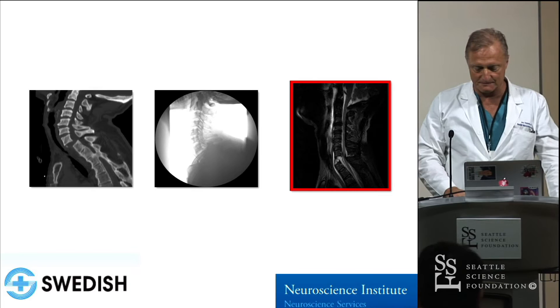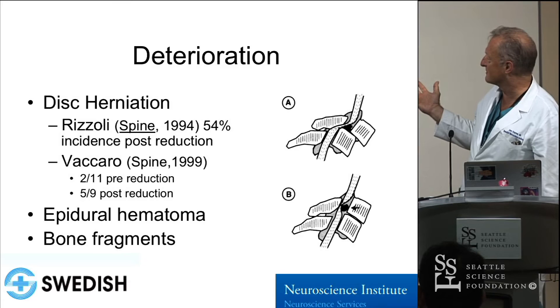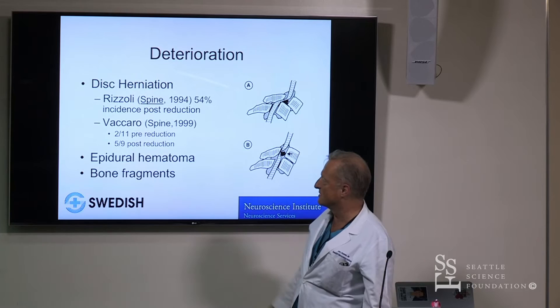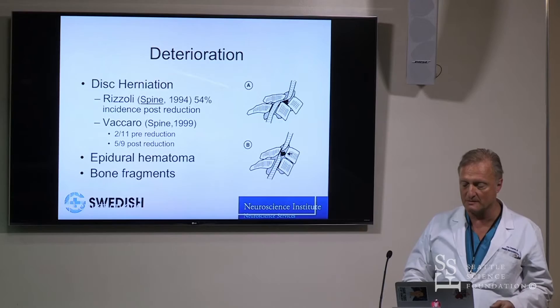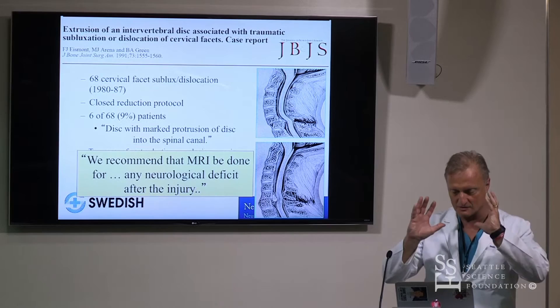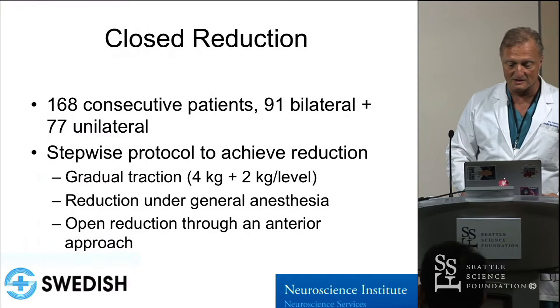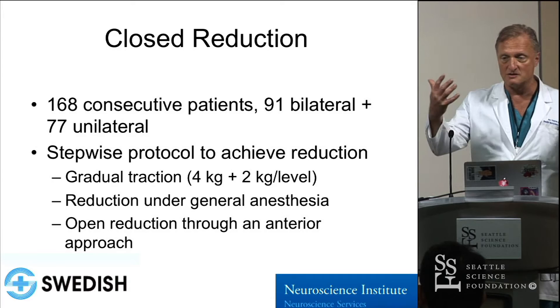One major fear of traction is dislodging a disc into the spinal canal, an epidural hematoma, or bone fragments. This is actually very rare. If you apply the traction protocol properly, it's almost unheard of. You just don't manipulate patients — no chiropractic maneuvers on a dislocated neck. Do everything with axial traction and gentle compression. These are the main papers supporting this. If I'm a spinal cord injury patient in your center, I want an urgent reduction done — period.